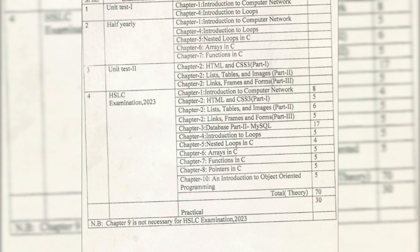When you prepare, give a little more importance to Chapters 1, 2, and 3 because from there a total of 41 marks are coming, and the remaining 29 marks come from the other chapters. So if you prepare nicely with these three chapters, you will easily be able to score good marks.